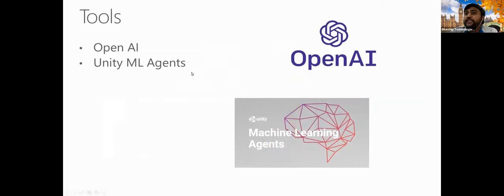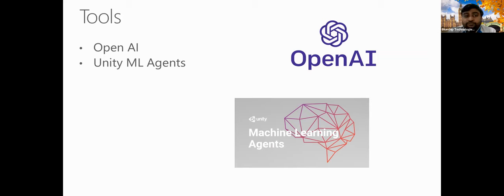There are two main tools. OpenAI Gym is one of the main tools, which Alex will discuss in more detail. It's a free, open-source tool you can install into Python frameworks and Anaconda environments. It has predefined environments you can use, and you can also create custom environments. If you have a custom scenario, you can use OpenAI Gym to create it. The other main tool is Unity ML-Agents.